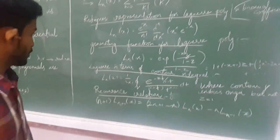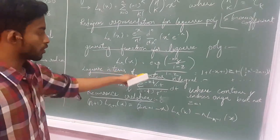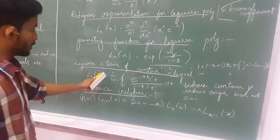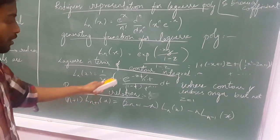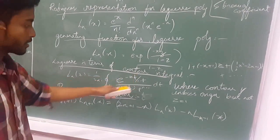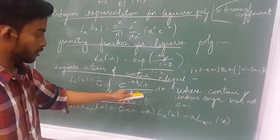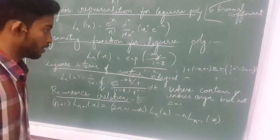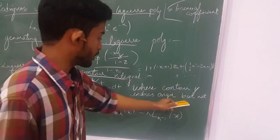Laguerre polynomials can also be expressed in terms of a contour integral as: L_n(z) = (1/2πi) × contour integral of e^(-zt/(1-t)) / ((1-t) × t^(n+1)) dt, where the contour encloses the origin but not z = 1.